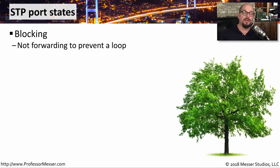If a port on a switch has been configured to use Spanning Tree Protocol, there are a certain set of states that this particular port might be in. One of these might be a blocking state. The switch may have decided that if it was allowing traffic to go through this particular interface, a loop would occur on the network, and it's decided through Spanning Tree Protocol to administratively block any traffic from going through that port.